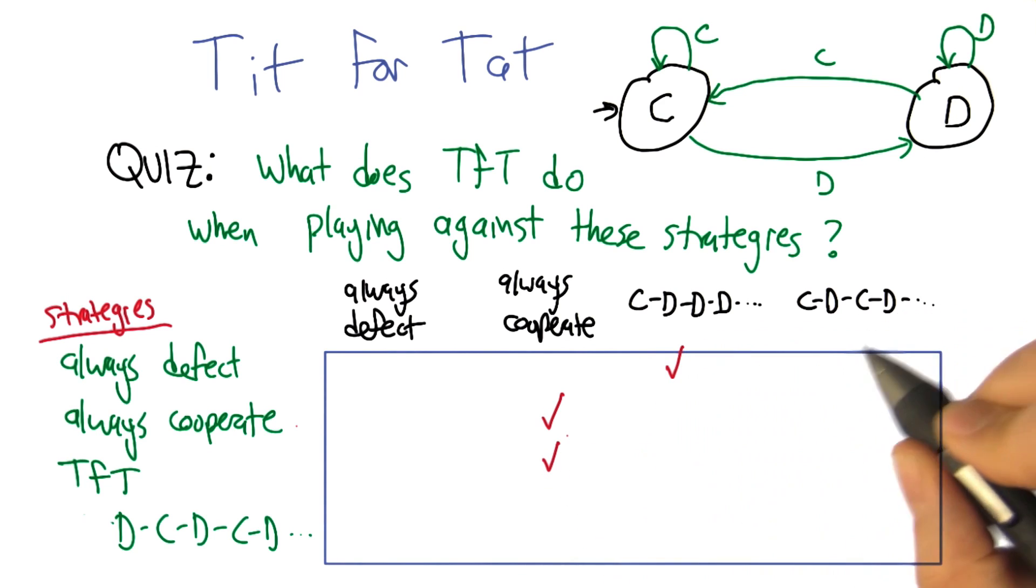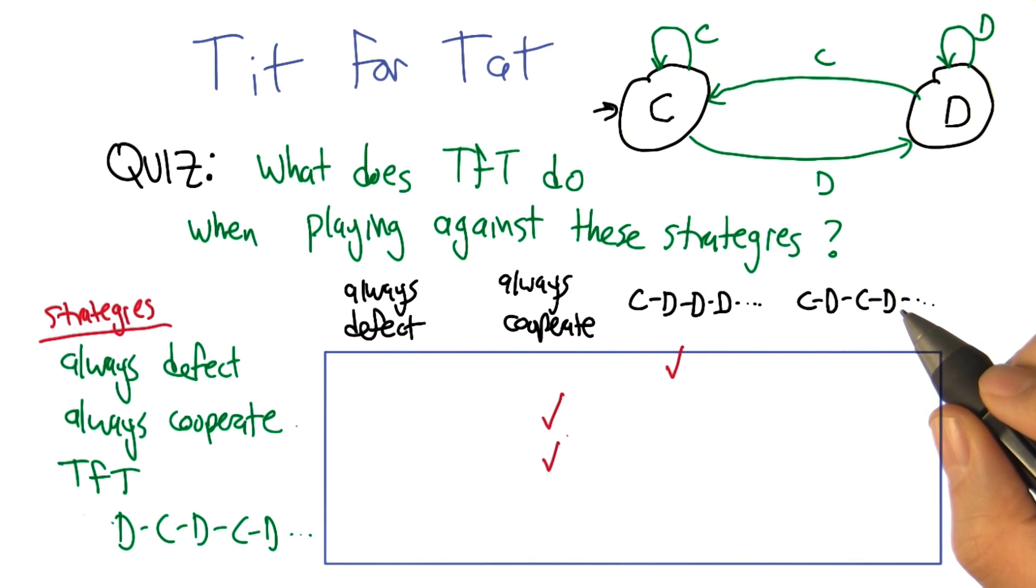Nice. So isn't that kind of interesting? So tit for tat, even though when it's playing against itself, is a very cooperative fellow. But if tit for tat is playing against something that defects, it becomes a little bit more vengeful. Yes.